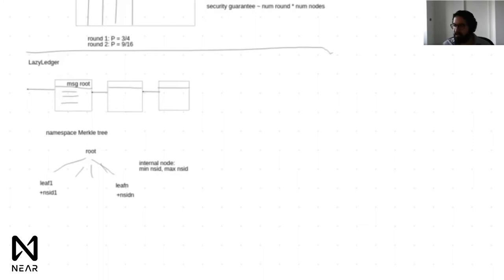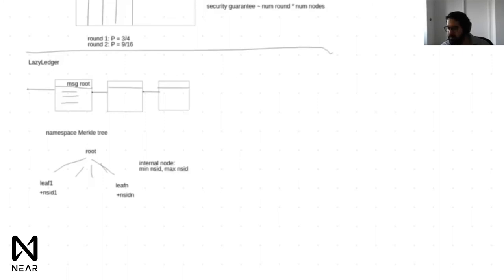Why not proof of work? Proof of work is appealing because you don't need any state to manage the validator set — it's managed implicitly through the work — and block headers are cheaper. But the problem with proof of work is you don't get deterministic or immediate finality like you do with BFT protocols. Proof of work finality is probabilistic, and you have things like variable block times, which generally makes things worse.